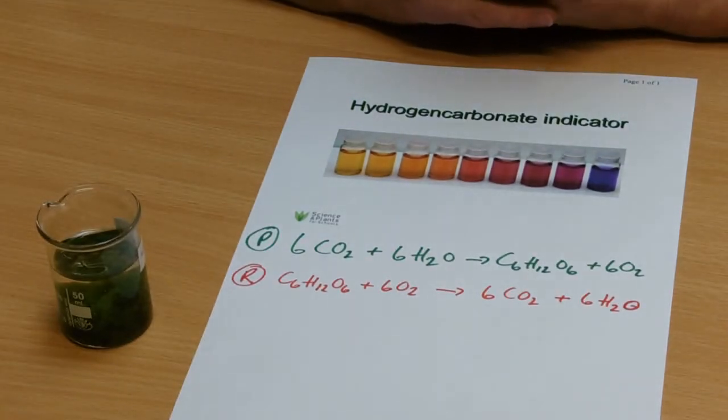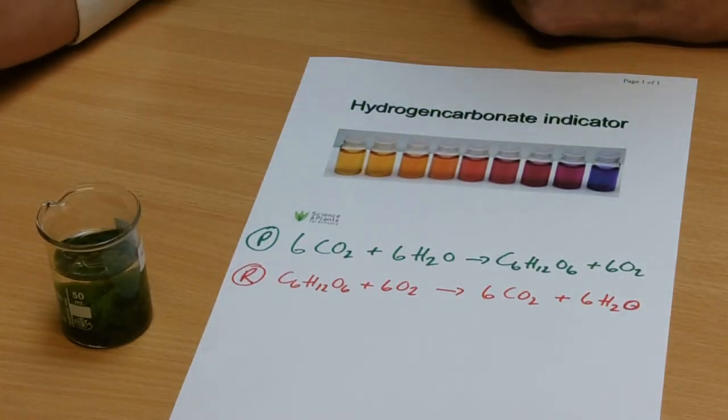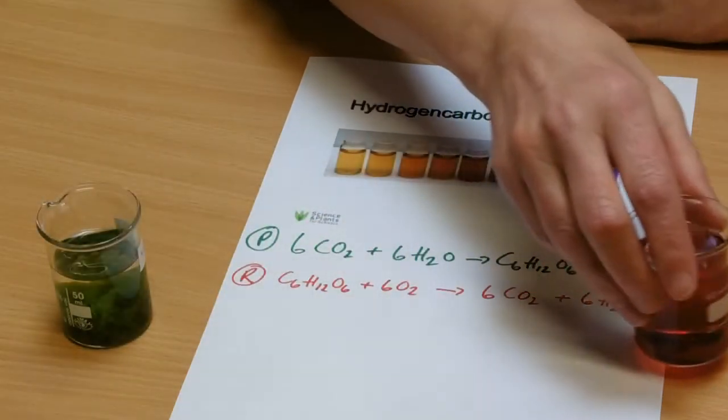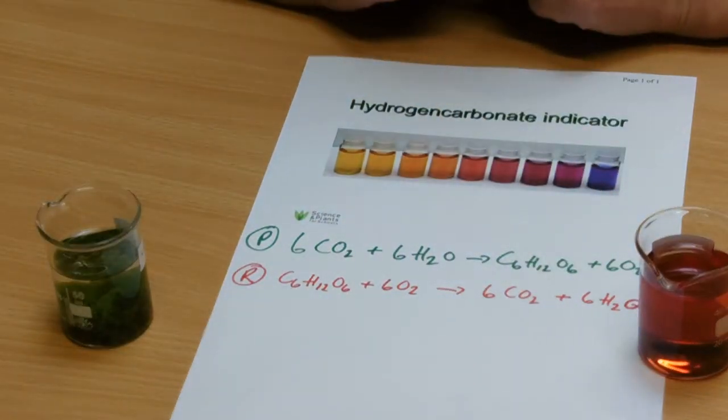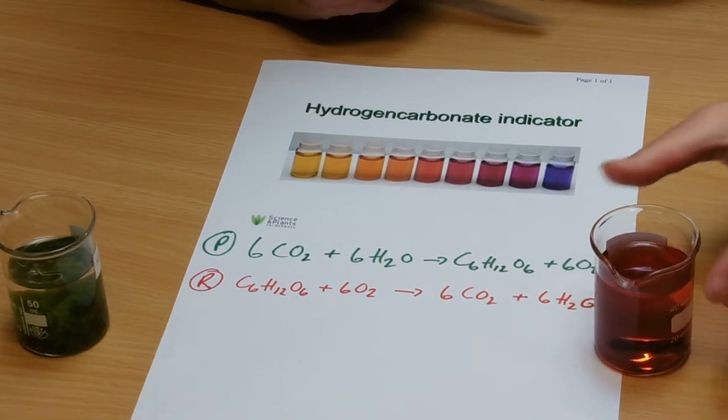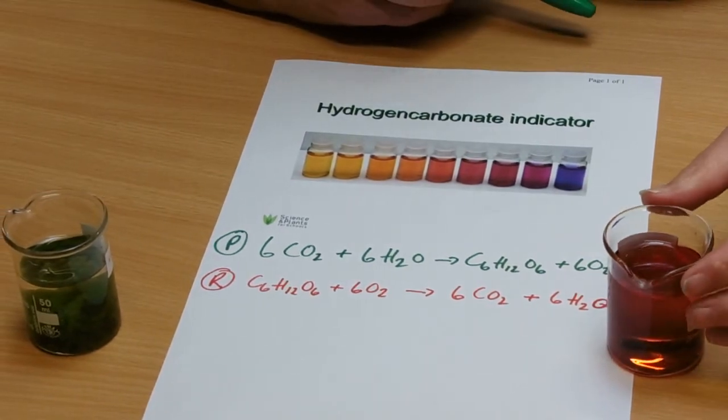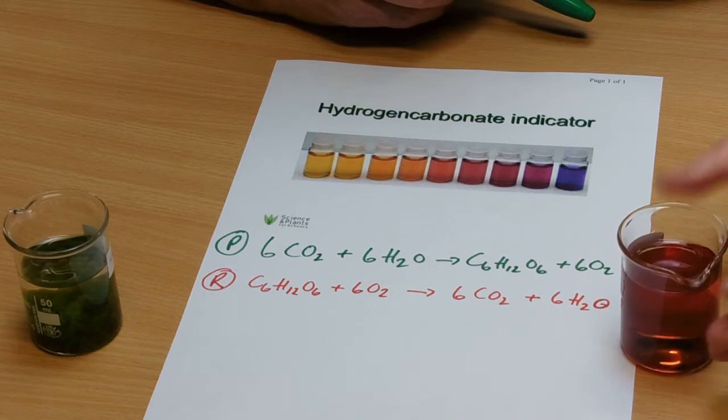OK, so the experiment that we're doing is we're going to use an indicator called a hydrogencarbonate indicator. And you can see that this is a lovely red color. It actually is an indicator of pH.